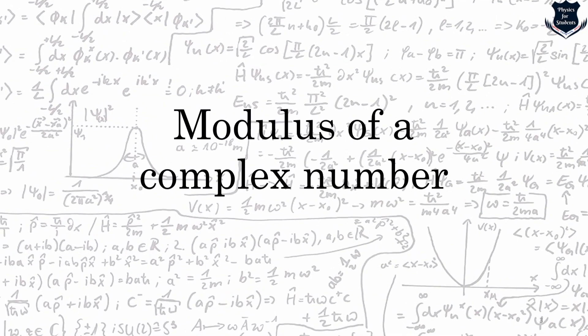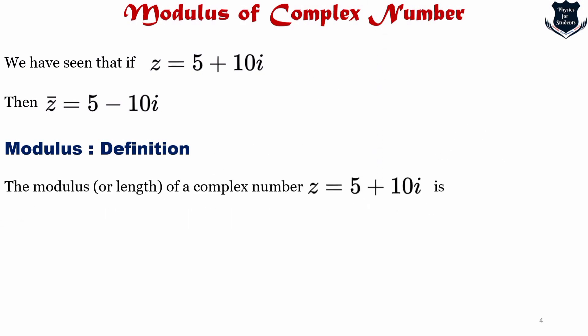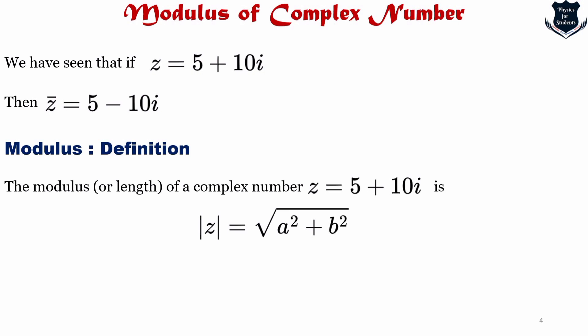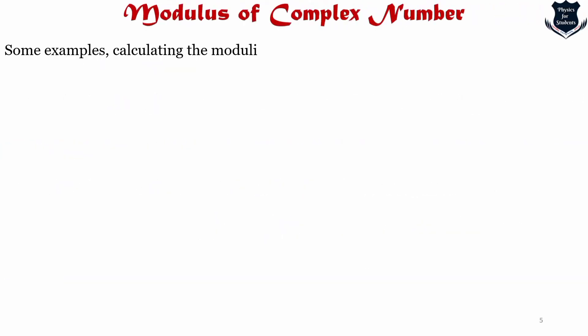First, let's understand what is called the modulus of a complex number. We have seen that if z equals pi plus 10i, we know what a complex conjugate is. The modulus or length of a complex number — for example z equals a plus bi — is given as the modulus of z equals the square root of a squared plus b squared. Since both a and b are real, the modulus is always real and positive.